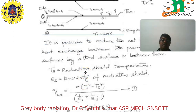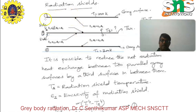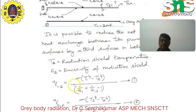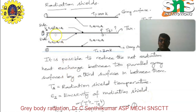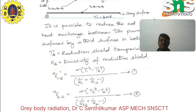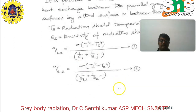The heat flux Q from surface 1 to 3 equals sigma times (T1⁴ − T3⁴) divided by (1/emissivity_1 + 1/emissivity_13 − 1). Let this be equation number 1. Similarly, Q from surface 3 to 2 equals sigma times (T3⁴ − T2⁴) divided by (1/emissivity_3 + 1/emissivity_2 − 1). This is equation number 2.